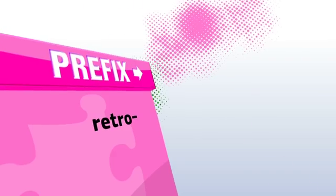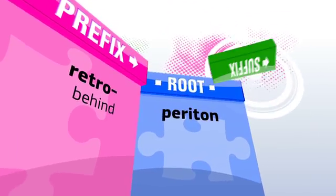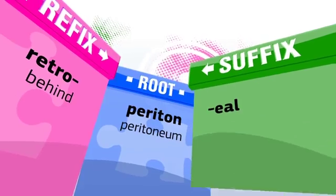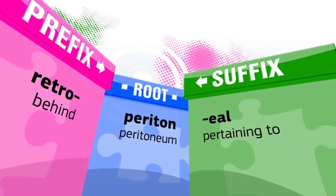Comprehending word parts and learning ways to identify the location of organs and structures will give you a greater understanding of many medical terms. For example, the kidneys are retroperitoneal. Let's break up the word into its parts: retro means behind, peritone means peritoneum, and -al means pertaining to. Just by breaking the word into its parts, we know the kidneys are located behind the peritoneum. If you remember that the peritoneum lines the abdominal cavity, then you have a good idea of where the kidneys are located in the body. Now let's test your knowledge.